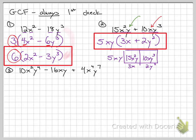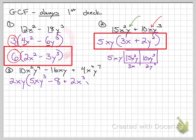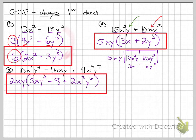Remember, GCF is always the first step, so even though this next problem is not two terms, we still look for GCF. For 10, 16, and 4, those are all divisible by 2. They all have x's — the fewest is x to the first — and they all have y's — the fewest is also y to the first. So the GCF is 2xy. Dividing each term by 2xy gives the remaining factors. That result is completely factored; there's nothing else we could do.